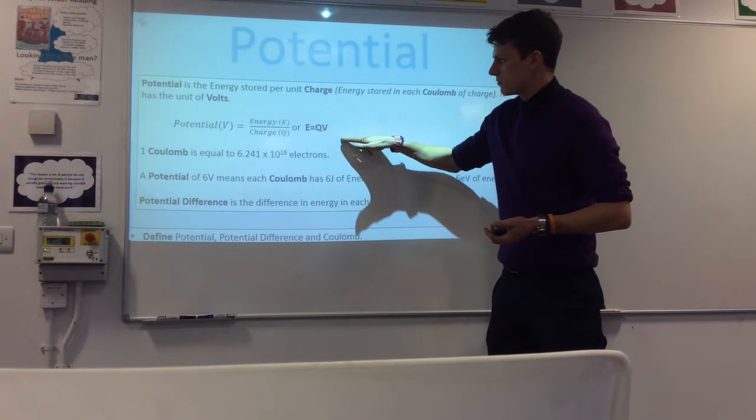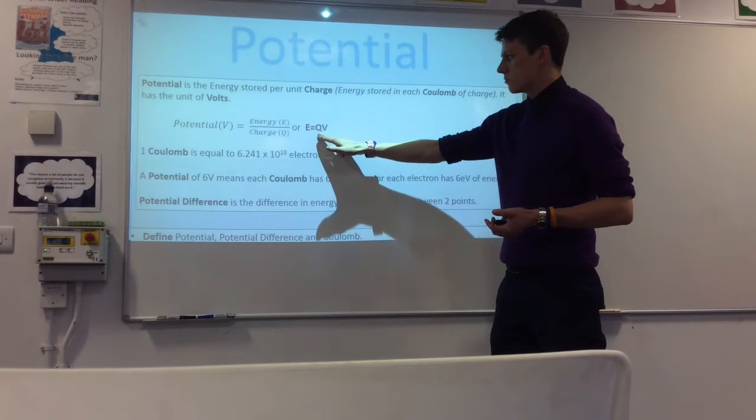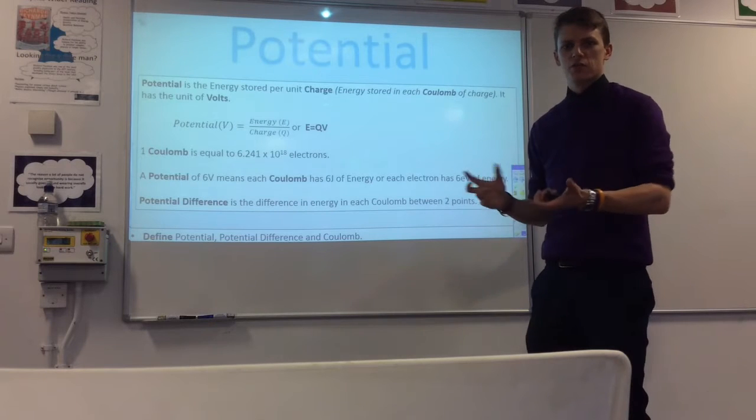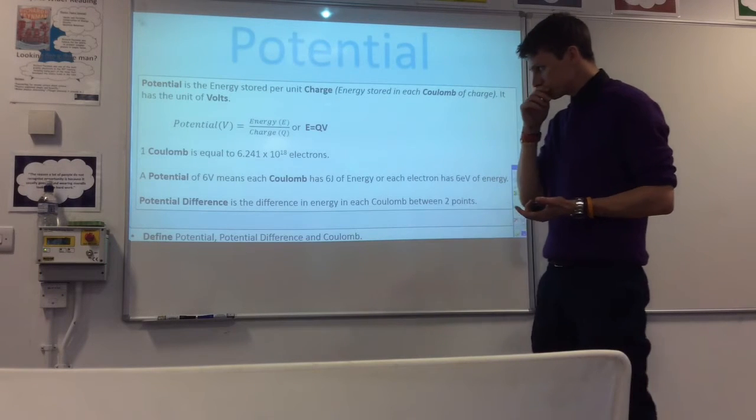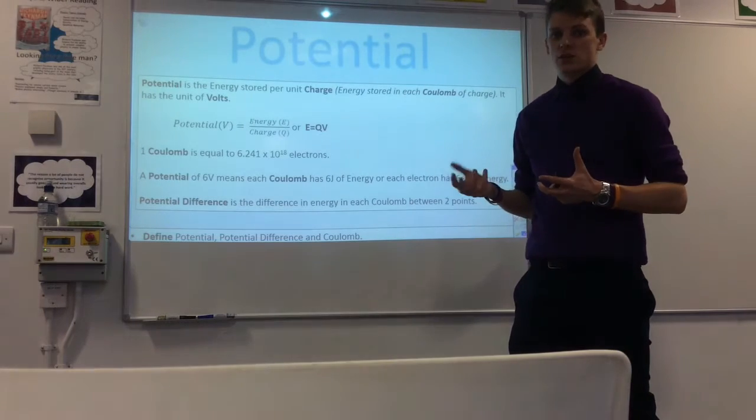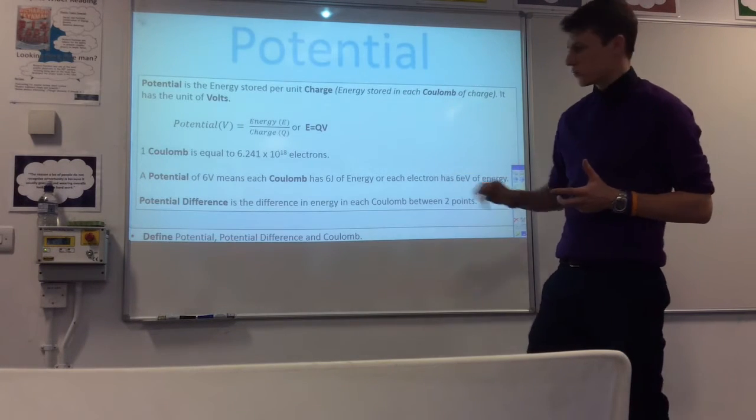And you'll often see it in the form like this. So E equals QV is the typical form you'll see this equation in. Usually that's what it is in a formula sheet. So in terms of what Coulomb is, it's just a large number of electrons.